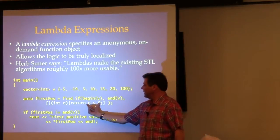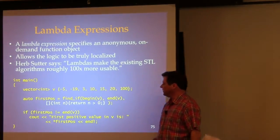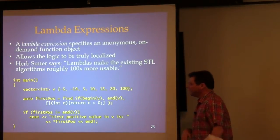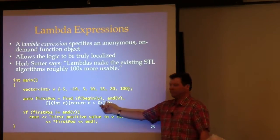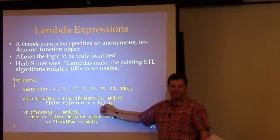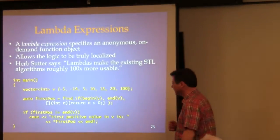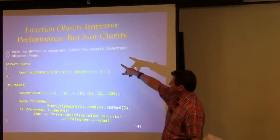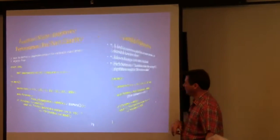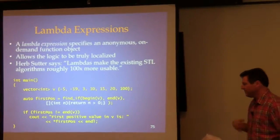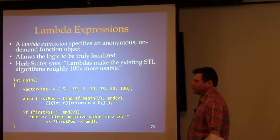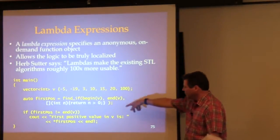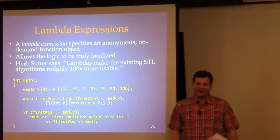So you can take this functionality and put it right where you use it. It generates a whole class and instantiates it, but it's inline and very efficient. The open-close square brackets introduce the lambda syntax, then comes the parameter list and the body — no need to declare the return type, the compiler figures it out from the expression.